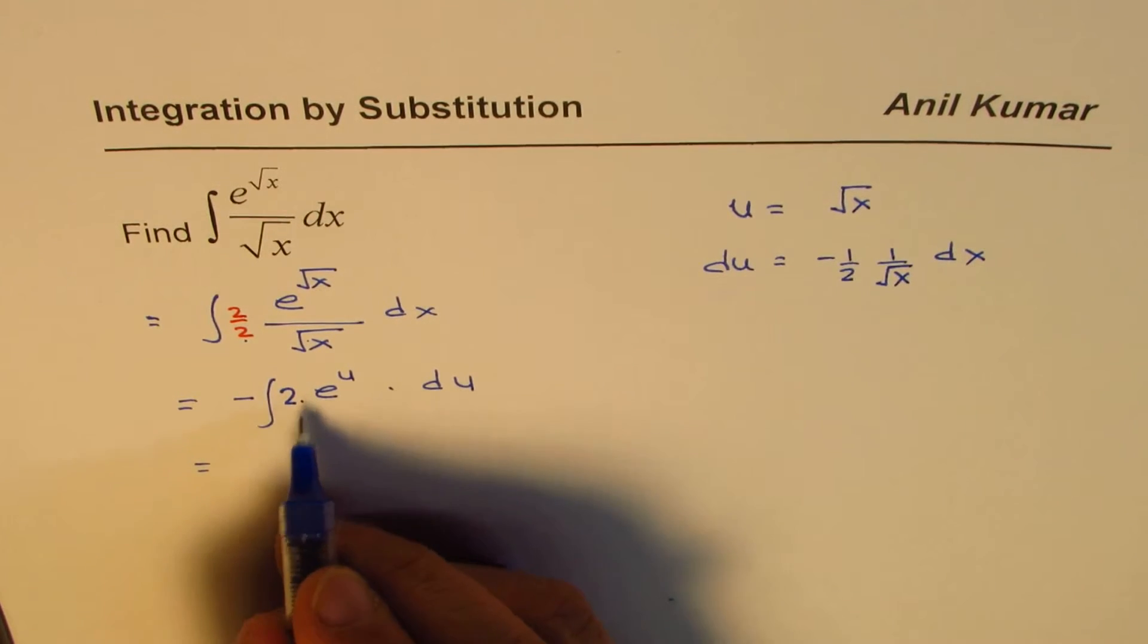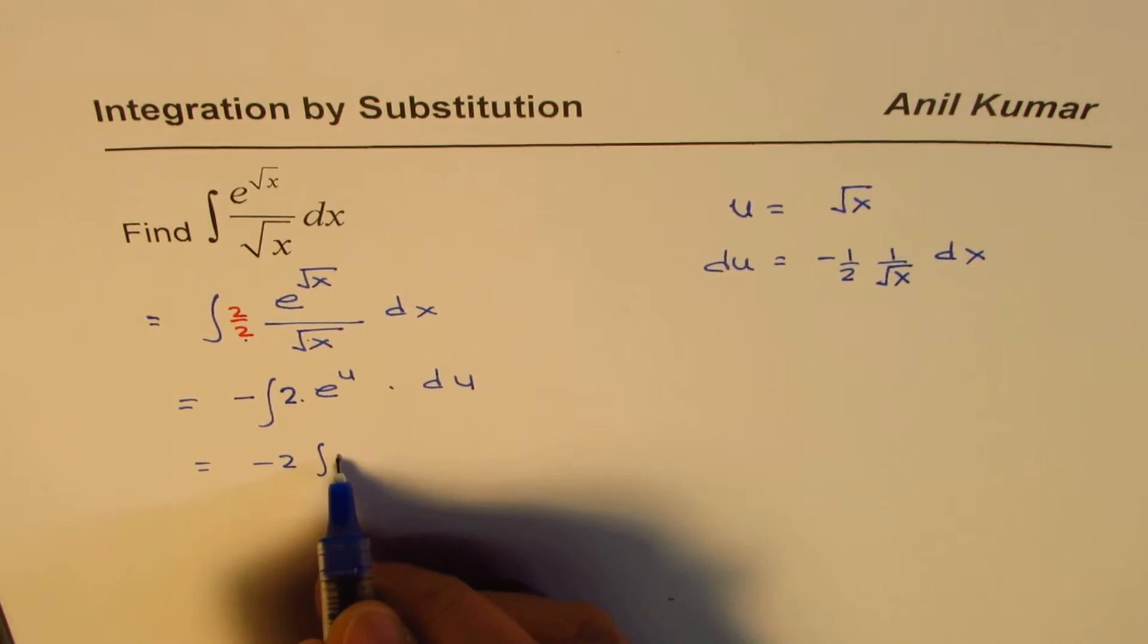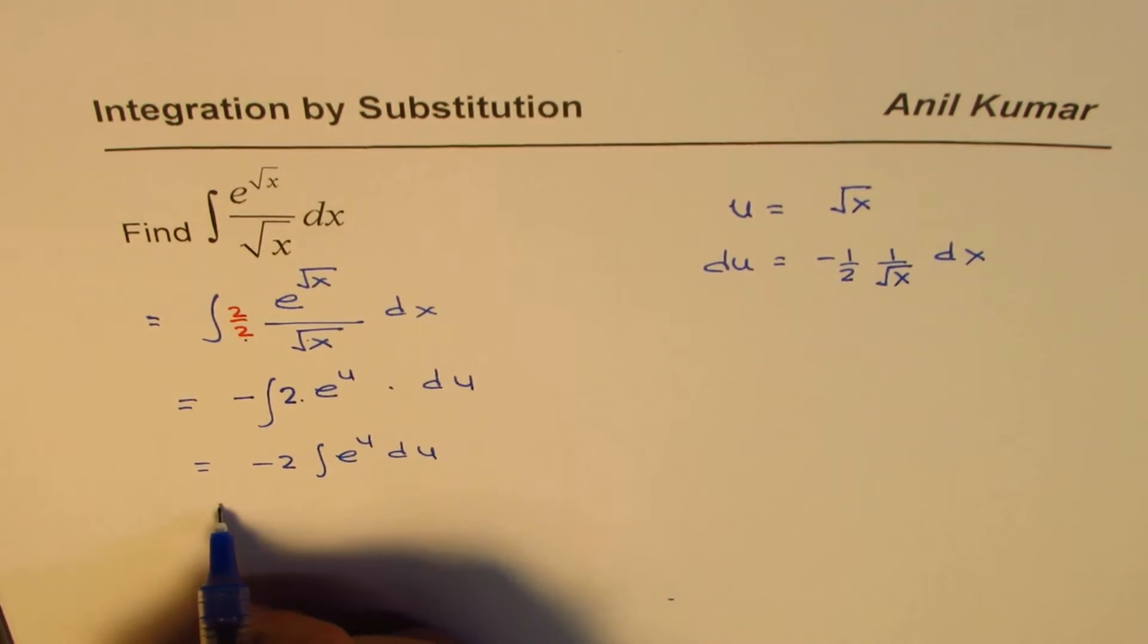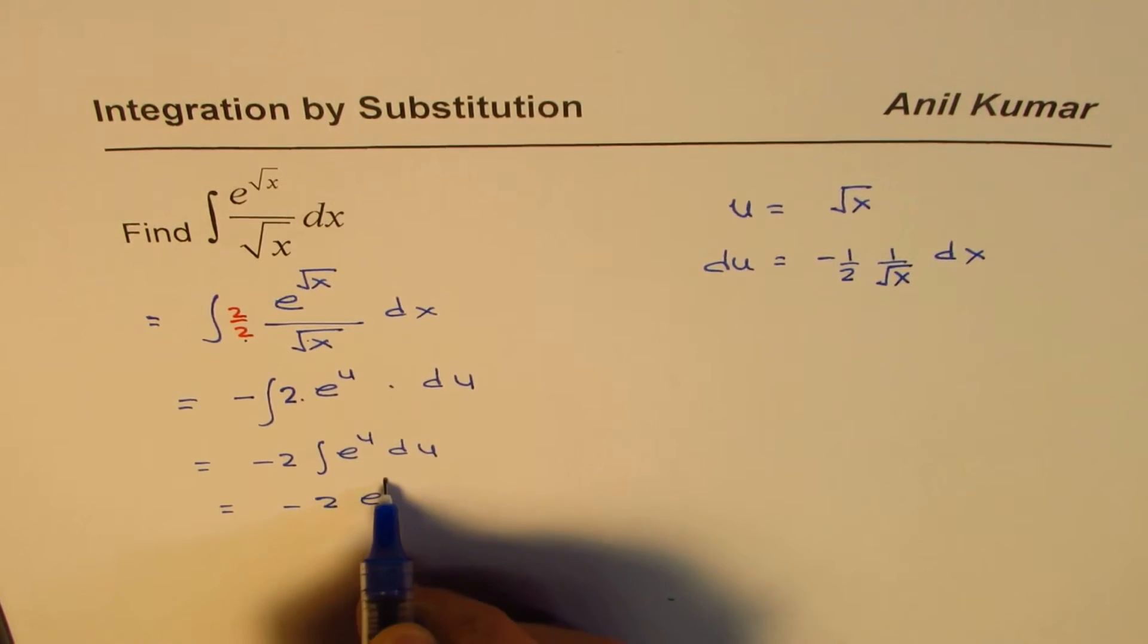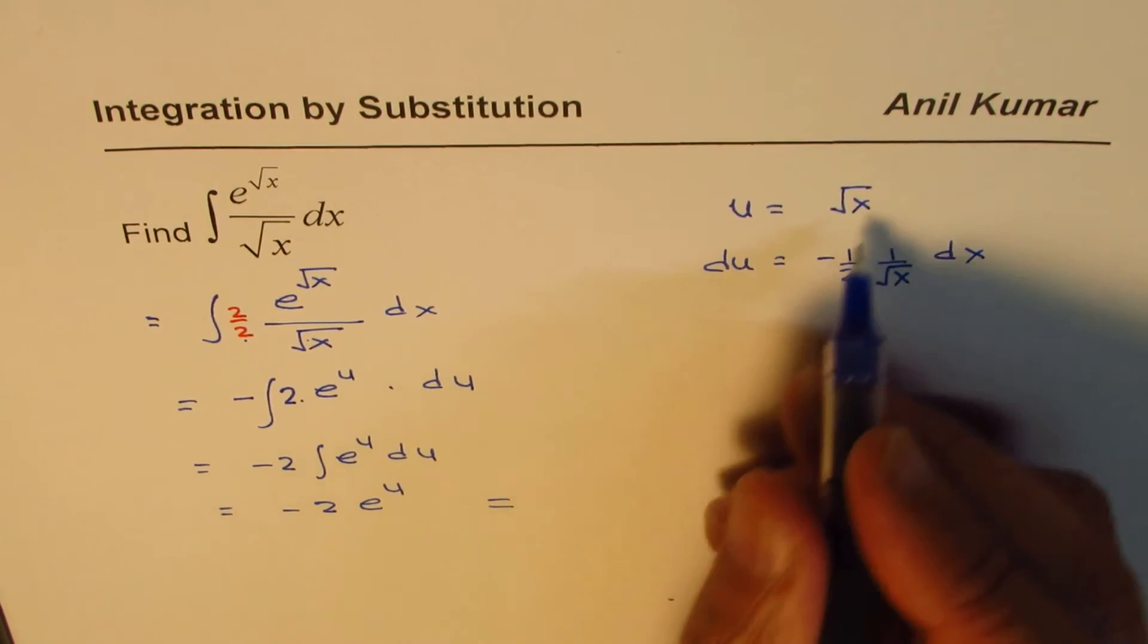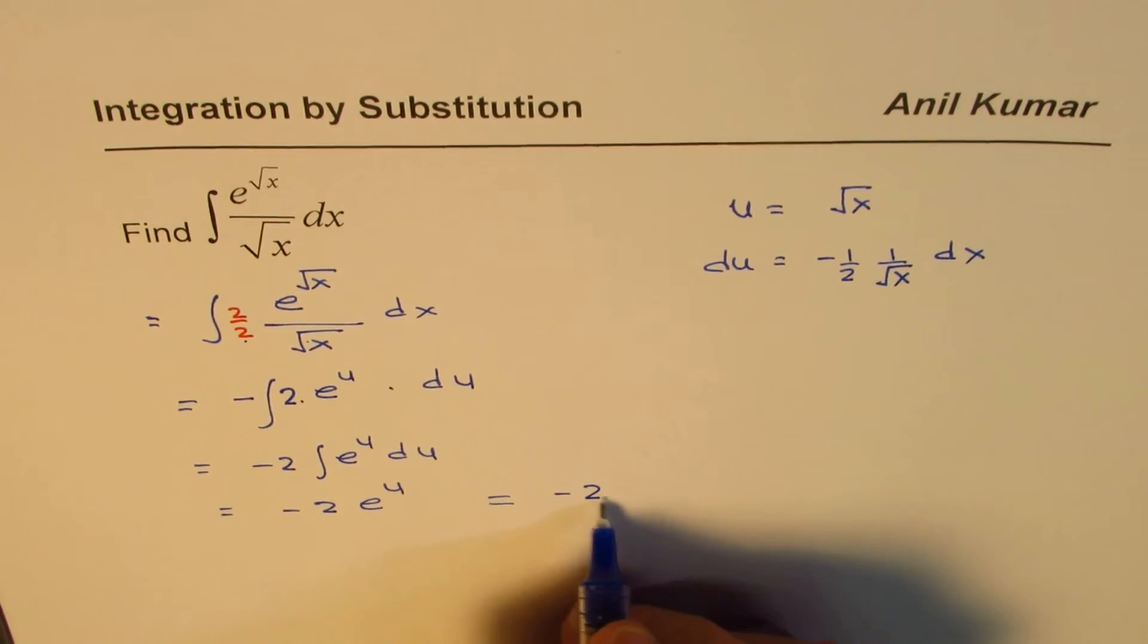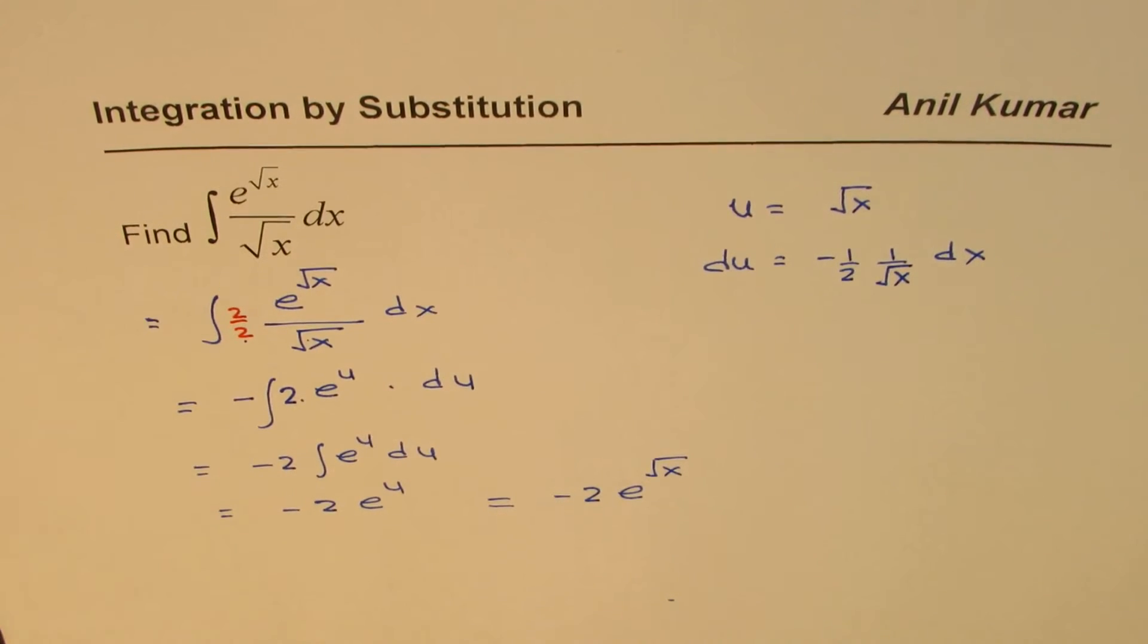Applying the properties of integrals, we have minus 2 integral of e to the power of u du, and that is clearly minus 2 e to the power of u. And that is, we can replace u by square root of x. Minus 2 e to the power of square root of x becomes the integral of the given question.